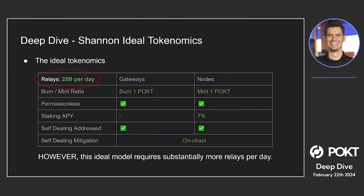You could have a burn ratio that's one-to-one: one POKT is burned, one POKT is minted. You can have permissionless gateways and permissionless nodes as it is today. Staking APY could be around 7%, right on track with other networks. And self-dealing is addressed entirely on-chain — not going through PNF. Everything is completely on-chain. This is where we would love to be able to launch Shannon.